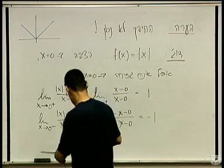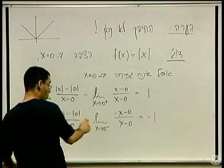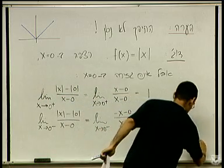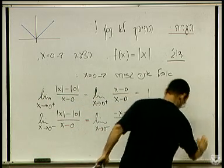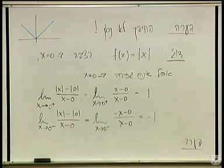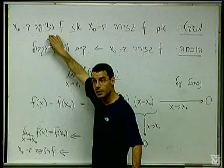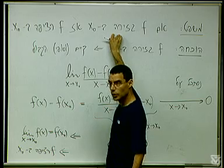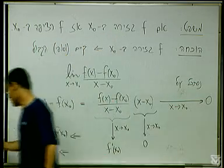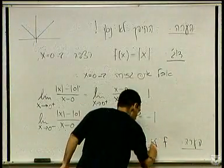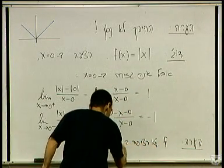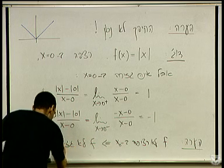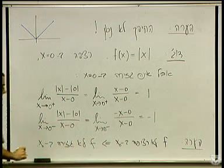אז זה לא נכון, לא נכון שרציפה גורר גזירה. מה כן נכון? הערה: זה תמיד - כשיש לנו משפט שגזירה גורר רציפה - מה אני כן יודע? לא רציפה גורר לא גזירה. זה לוגיקה: a גורר b, לא-b גורר לא-a. אז: f לא רציפה ב-x0 גורר f לא גזירה ב-x0. זה תמיד נכון.